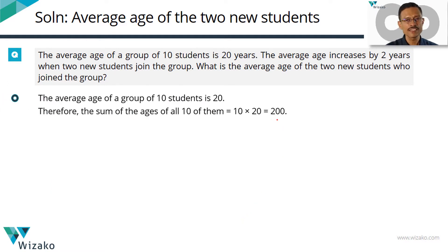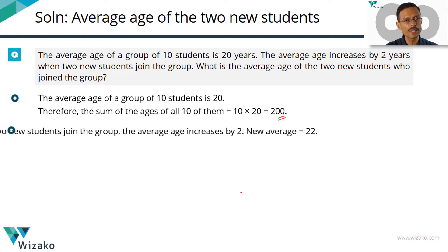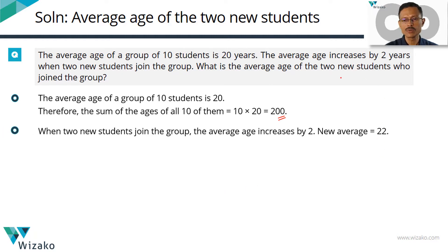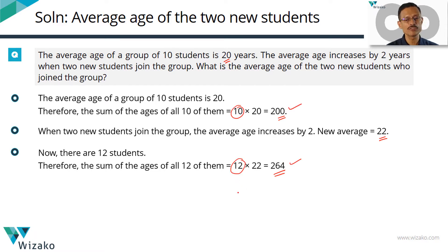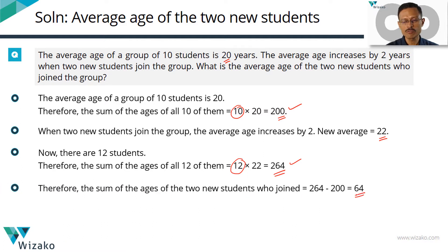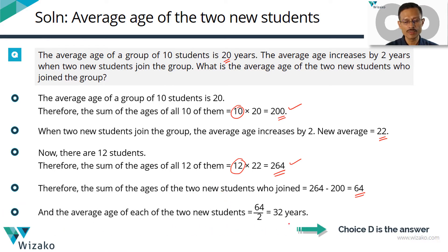Initially 10 students, sum of their ages is equal to 200. Two new students join and the average goes up by 2, so the new average is 20 plus 2, which equals 22. All 12 students: sum of their ages is 12 into 22, which equals 264 years. The difference between 264 and 200 is 64, which is the sum of the ages of the two new students. So their average age is equal to 32 years. Choice D is the correct answer.